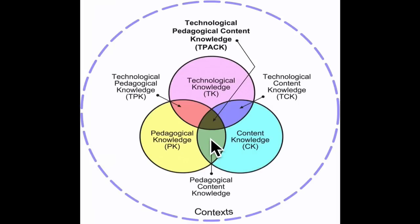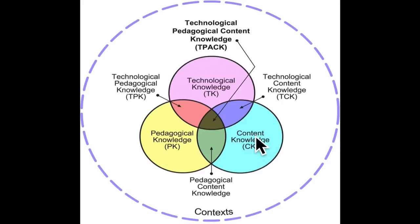The best way to explain this is: I have knowledge of how to teach maths, I have knowledge of how to teach science, and I have knowledge of how to teach. This is my science knowledge, maths, this is teaching. The way I teach maths is different to the way I teach science — so you get this pedagogical content knowledge.